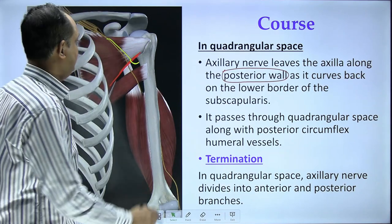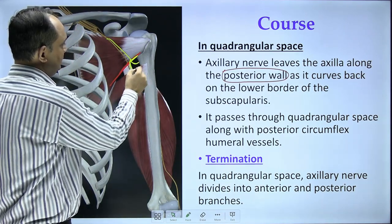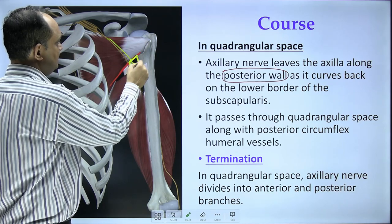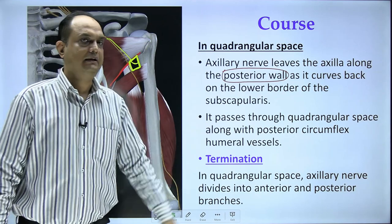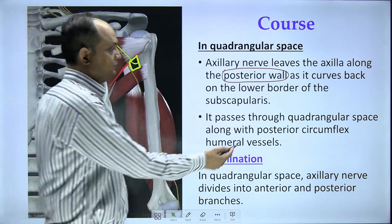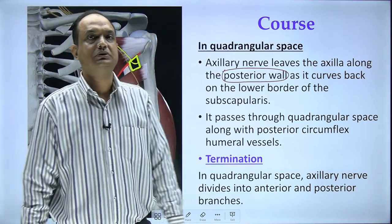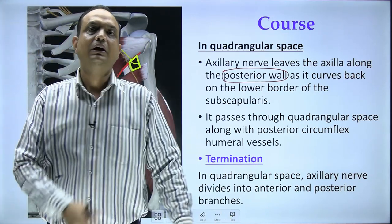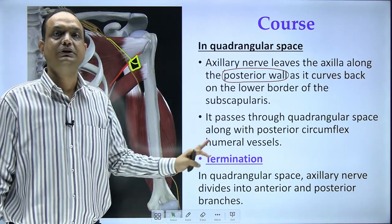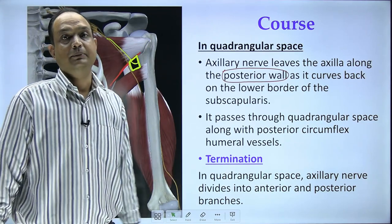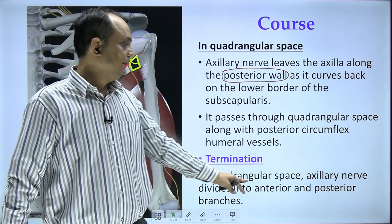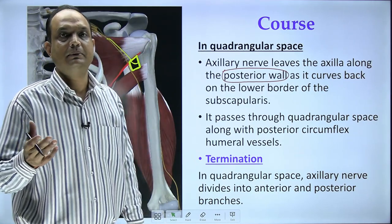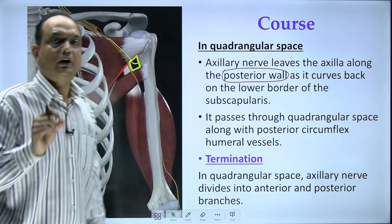After reaching the lower border of subscapularis and taking its turn, the axillary nerve enters the quadrangular space. This space has four borders, hence the name. In the quadrangular space, it has a very important relation with the posterior circumflex humeral artery — a commonly asked exam question about which structures pass through the quadrangular space.